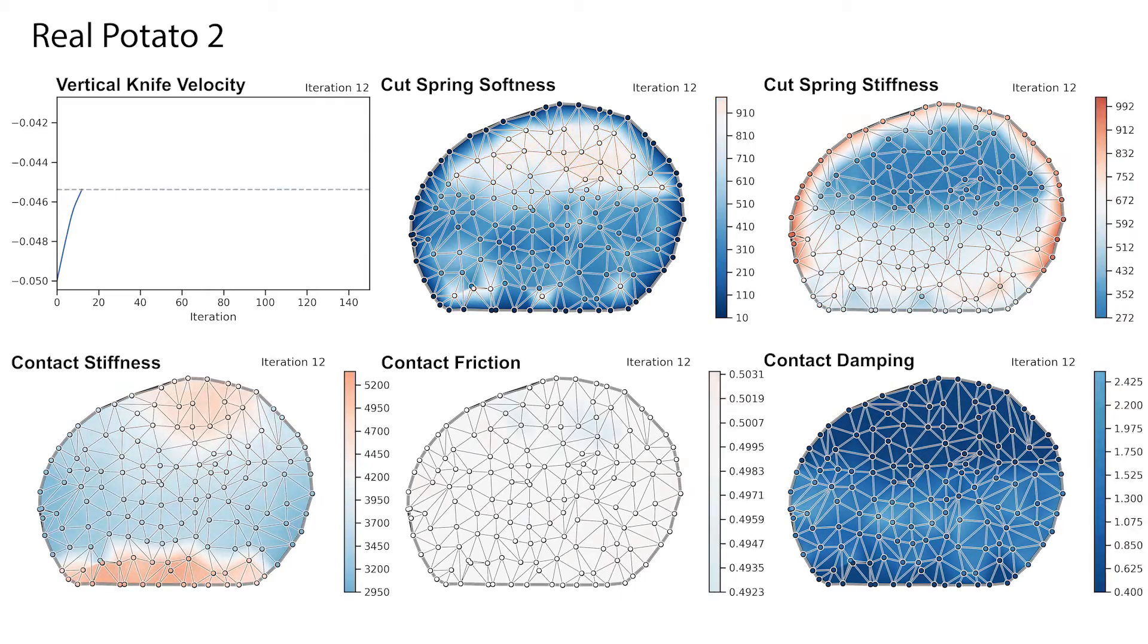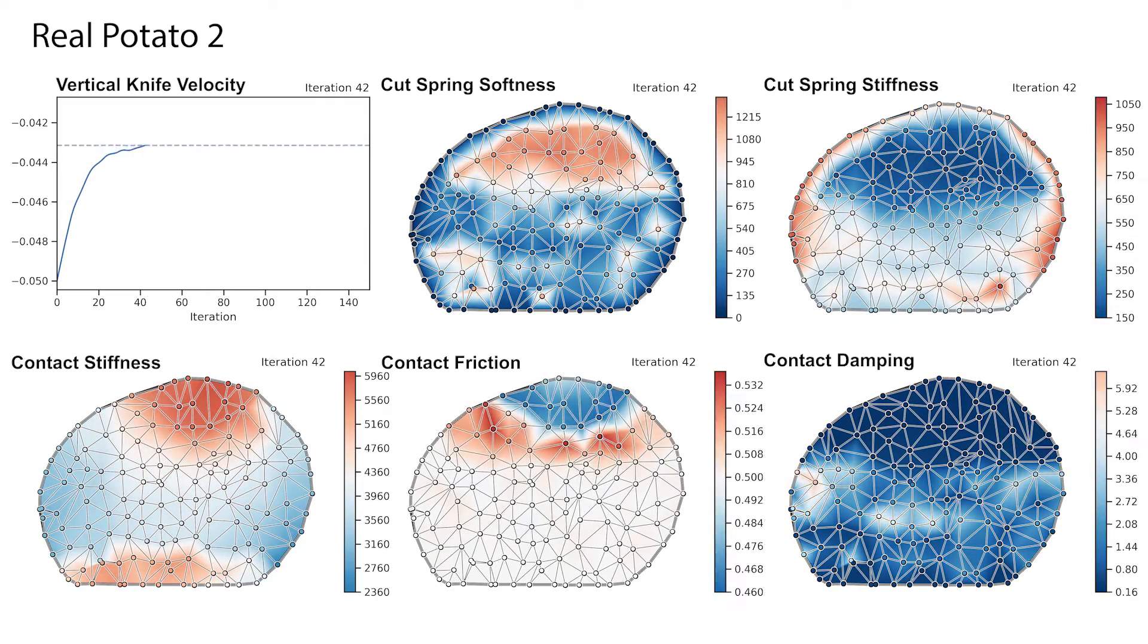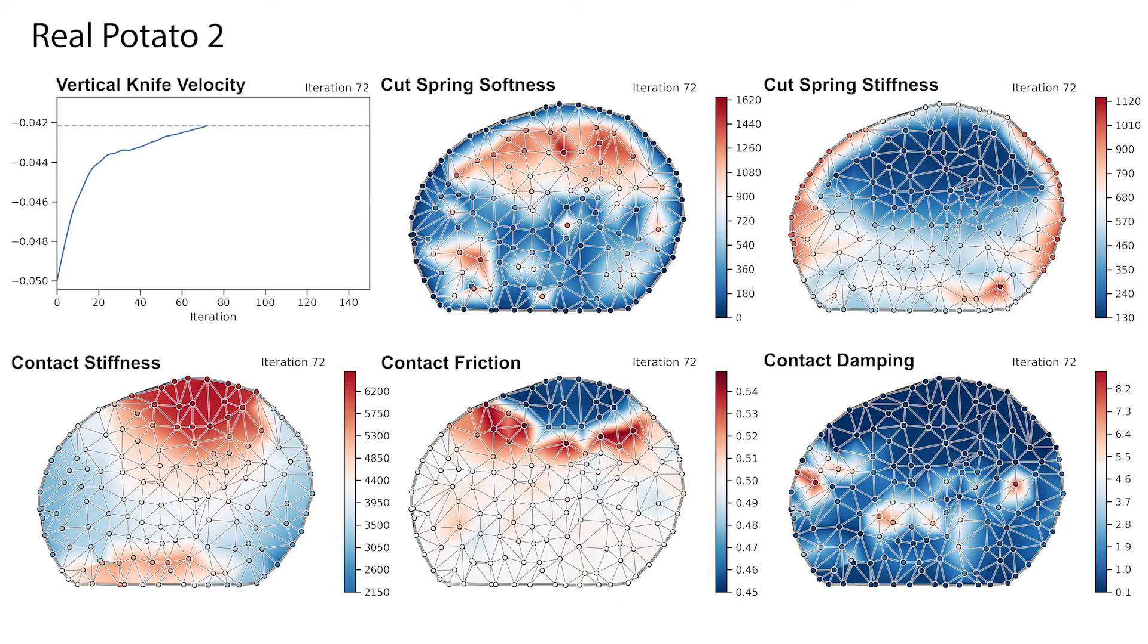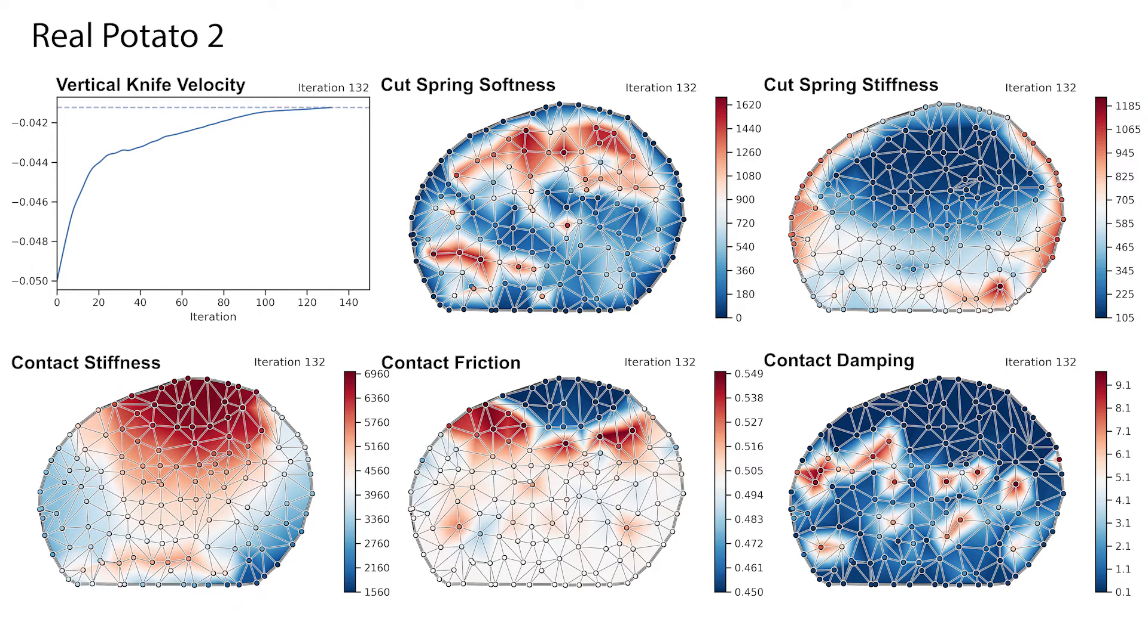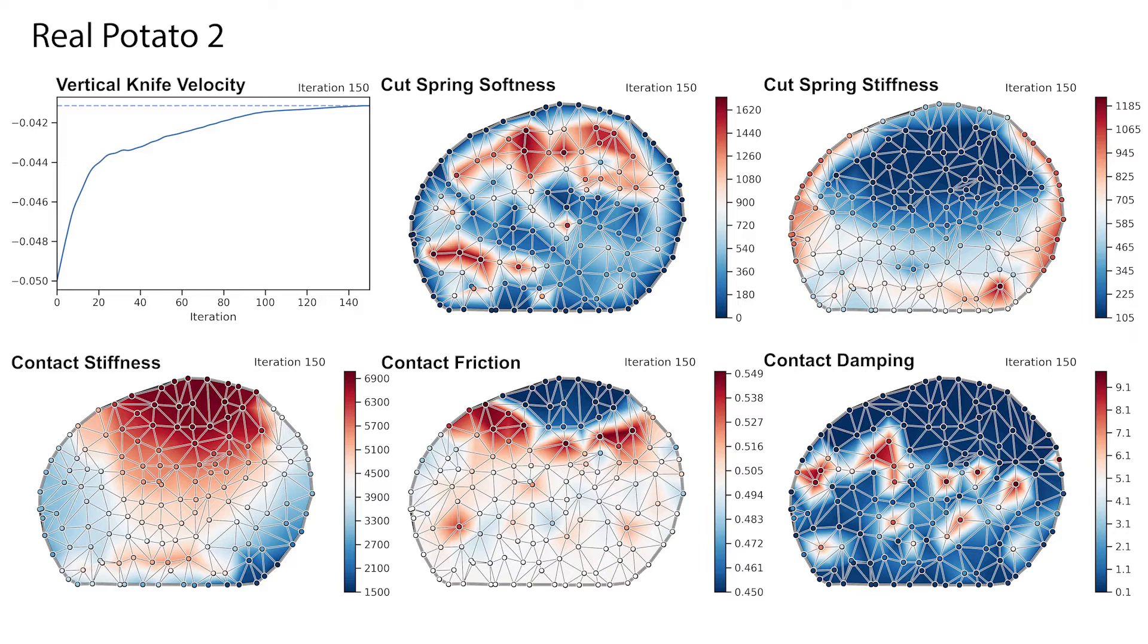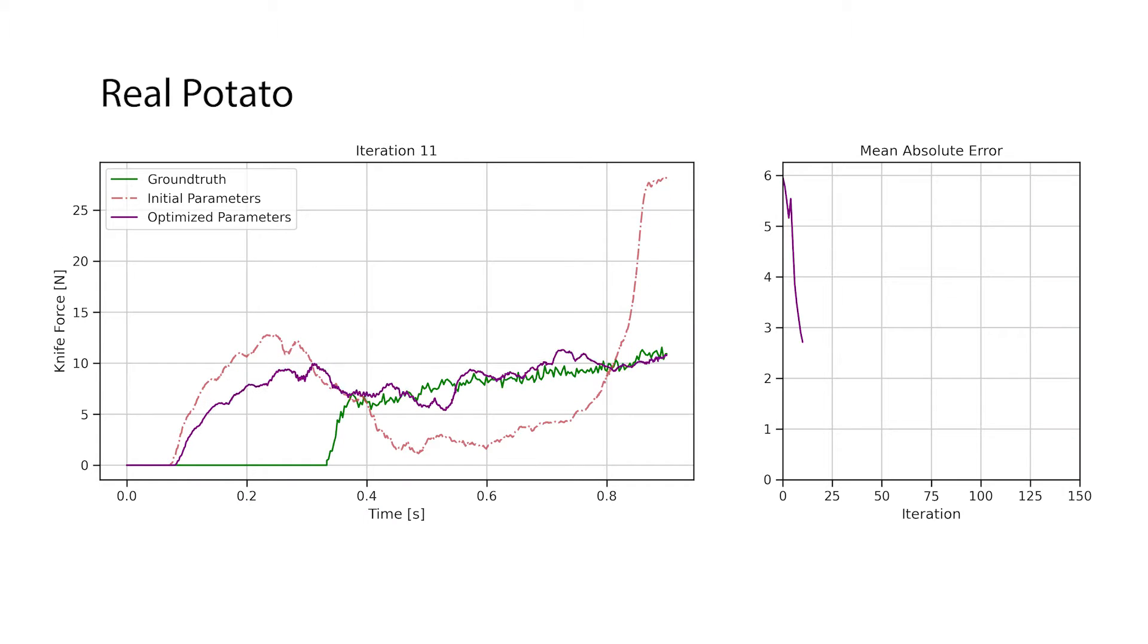In the following, we show the evolution of the simulation parameters corresponding to each cutting spring while minimizing the error in the predicted knife force profile between our simulator and real-world measurements from a robot cutting an actual potato. Within 150 gradient evaluations, our simulator closely predicts the knife force profile.